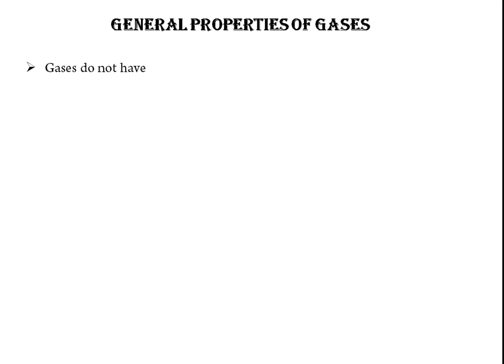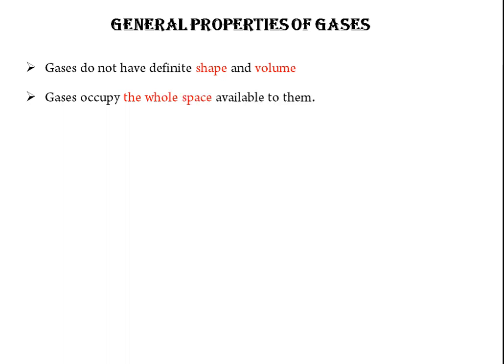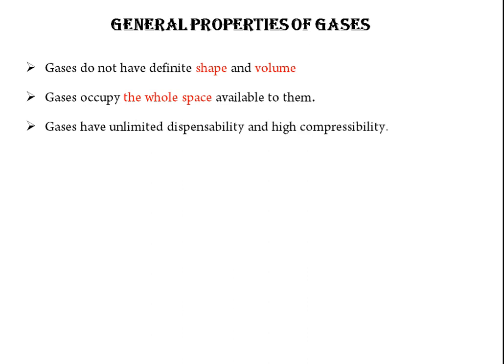First of all we will see the general properties of gases. Gases do not have a definite shape and volume. Gases occupy the whole space available to them. For example, suppose you have a 10-liter container and 1 liter of gas — the whole 10-liter space of the container will be occupied by that 1-liter gas. Gases have unlimited expansibility and high compressibility.